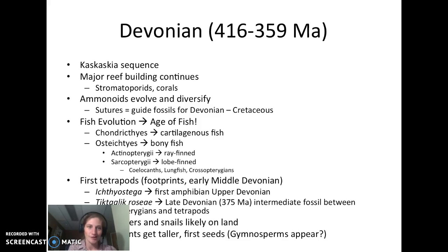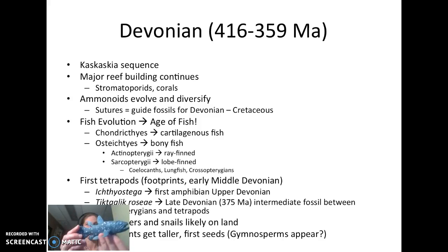Fish start to evolve like crazy, which is why the Devonian is called the Age of Fish. We have our Chondrichthyes — the cartilaginous fish including skates, rays, and sharks — showing up in the Devonian. We have our Osteichthyes, the bony fish, which include the Actinopterygii (ray-finned fish) and the Sarcopterygii (lobed-finned fish). The Sarcopterygii involve our coelacanths, lungfish, and crossopterygians.